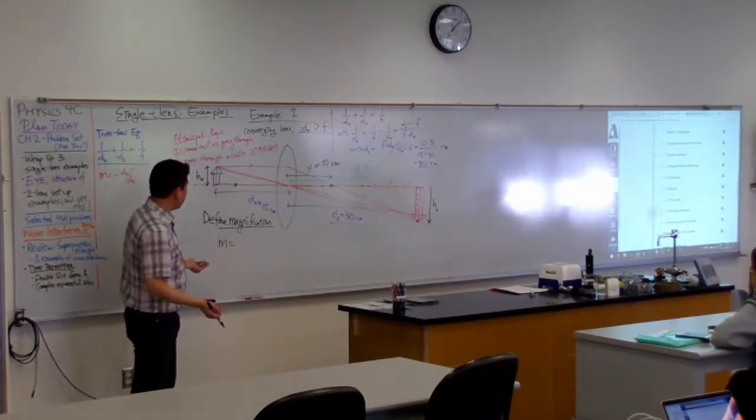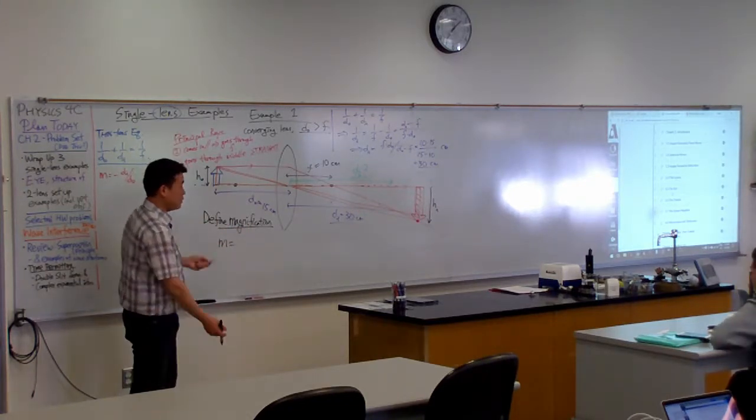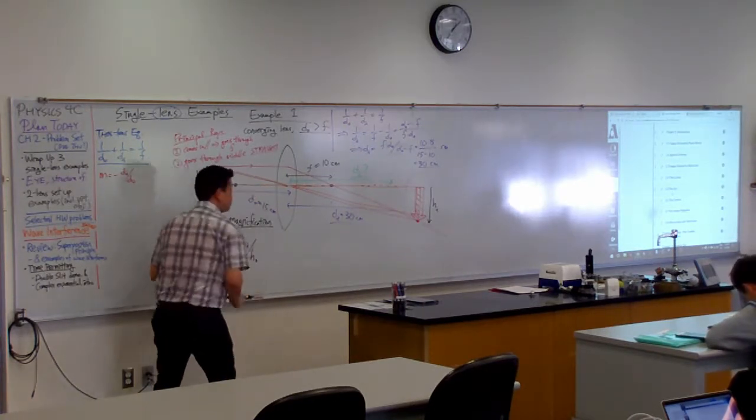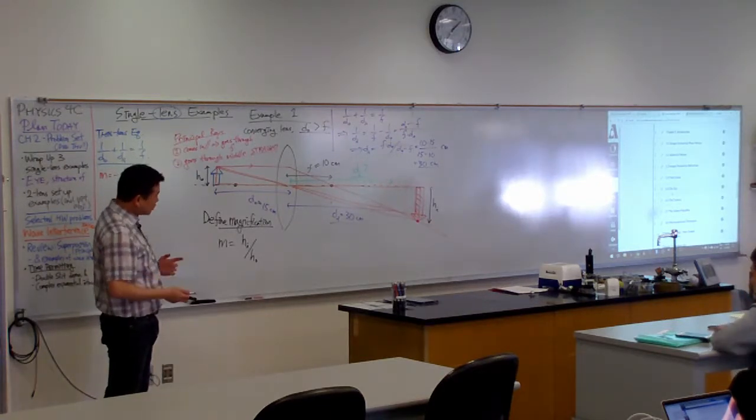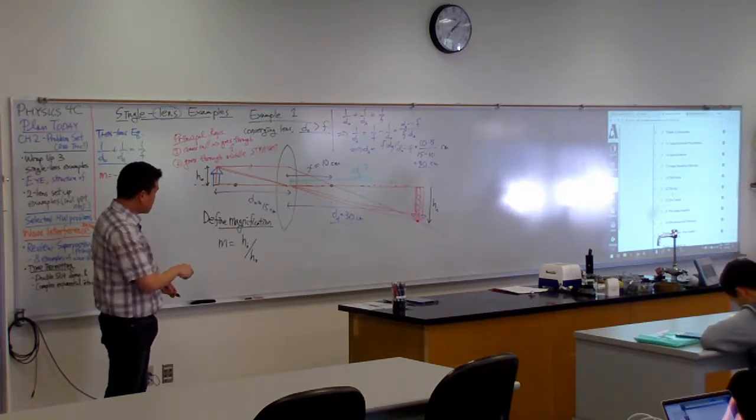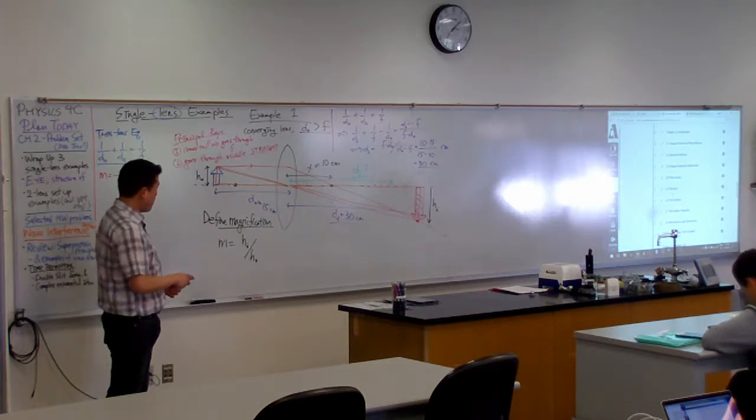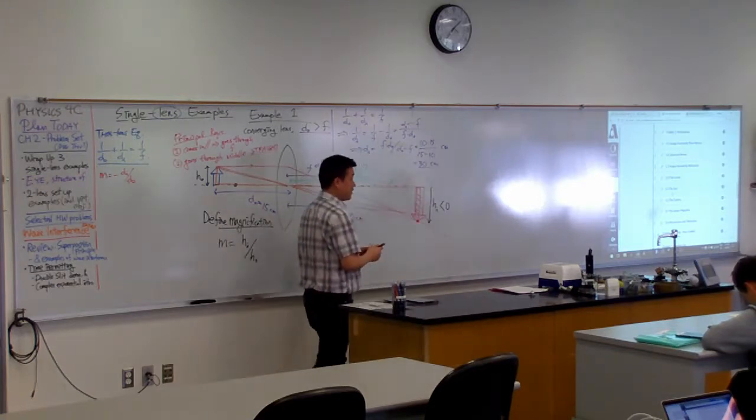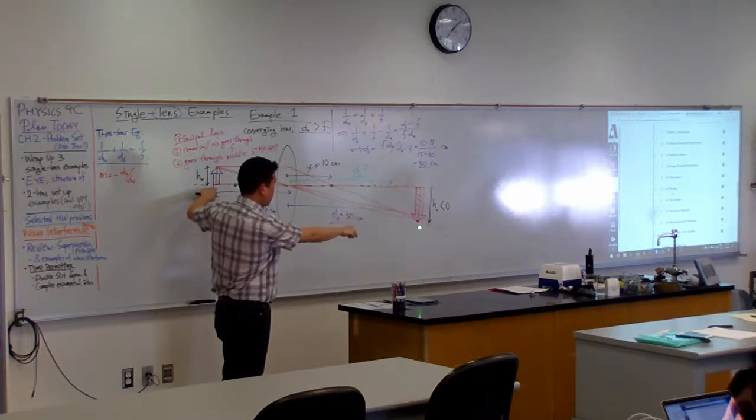So, I might say my magnification M is the ratio of these two. Ratio of the height of the image divided by height of the object. Good? And we are actually going to allow this magnification to be positive or negative. So, this HI here as drawn, this would actually be a negative number. Because it's going, the object started out upright, and it's going below the axis. So, we are going to say this is a negative number.